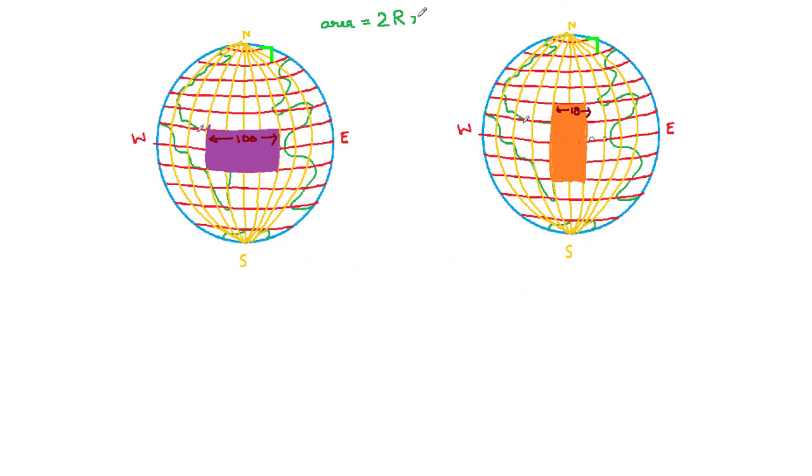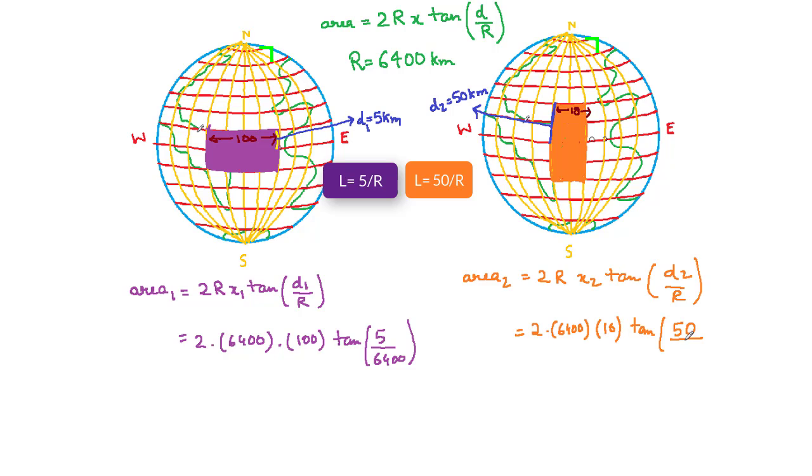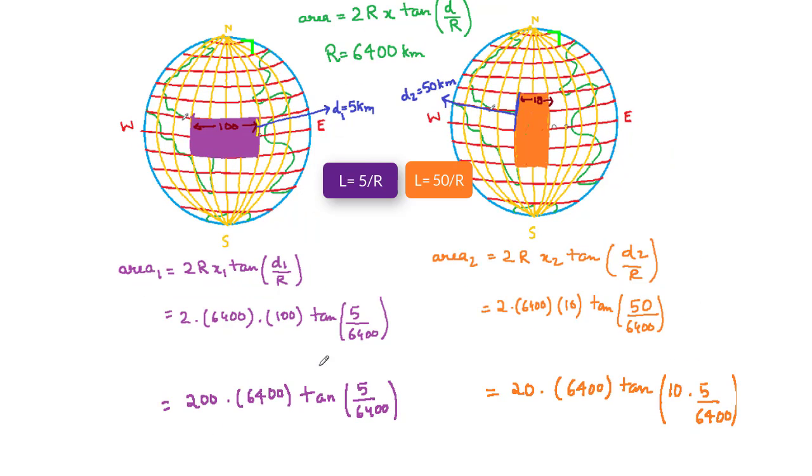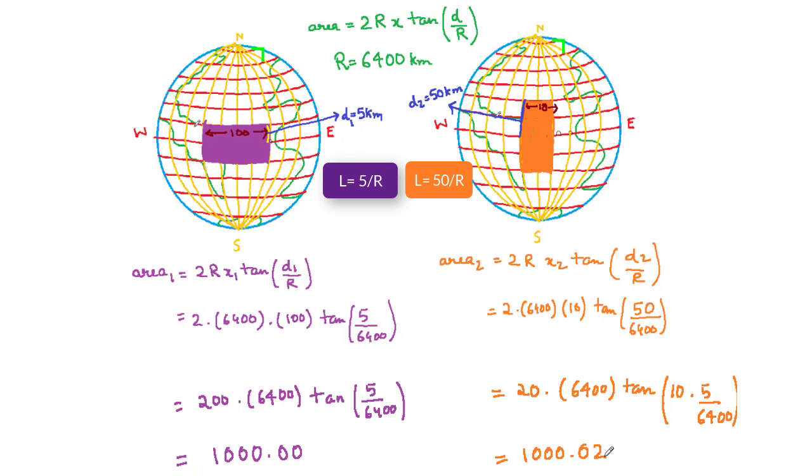In our case when the east-west boundary x is 100 kilometers, d is 5 and therefore the latitude is 5 by r. Similarly when the east-west boundary is 10 kilometers, d is 50 so the latitude is 50 by r. Putting these numbers for earth as a sphere of 6400 kilometers we get both land areas as 1000 square kilometers.